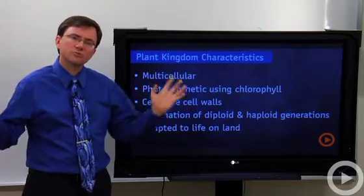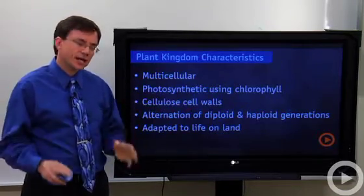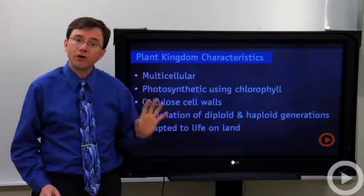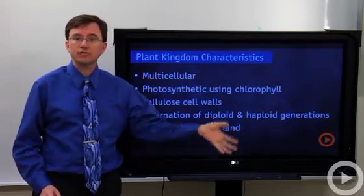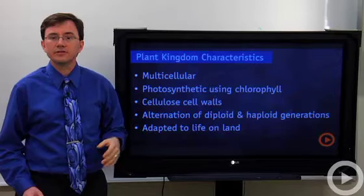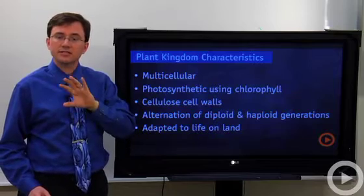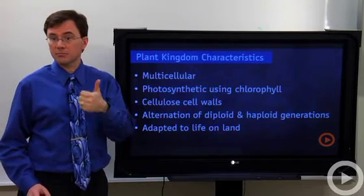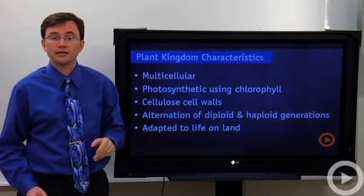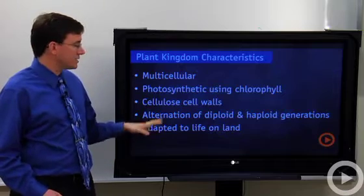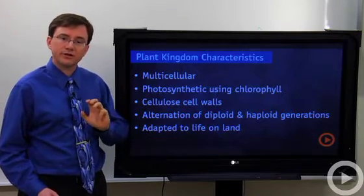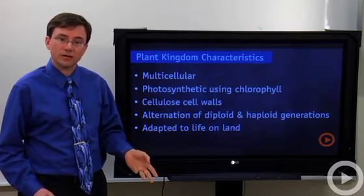One of the key things that groups all the plants together is the fact that they're adapted to life on land. They evolved from algae that were in water, but they took advantage of things on land like more carbon dioxide in the air and more light. But they had to deal with the fact that life on land requires figuring out how not to dry out.